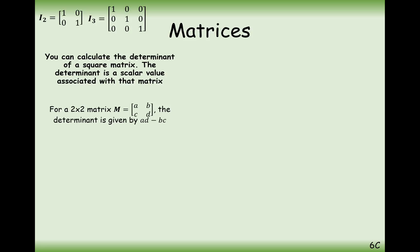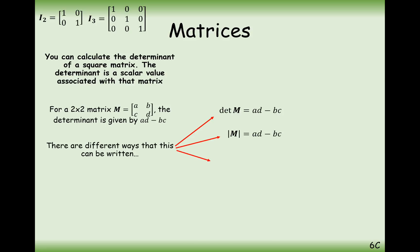For a 2 by 2 matrix, the way we work out the determinant is by cross-multiplying and subtracting. It's A times D — the leading diagonal product — subtract B times C, the other diagonal product. So the determinant of a standard 2 by 2 matrix is AD minus BC. We can write this as det(M), with two vertical lines either side of M, or with vertical lines either side of the whole matrix.